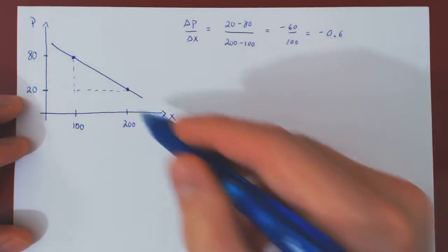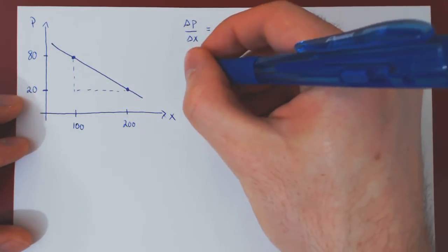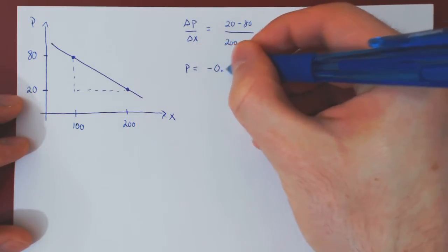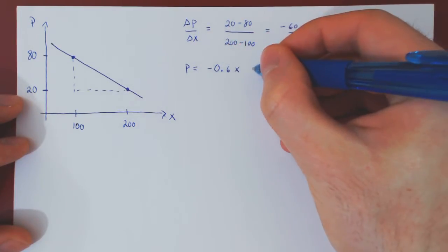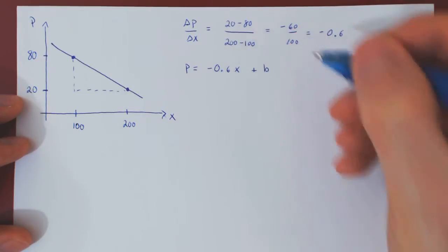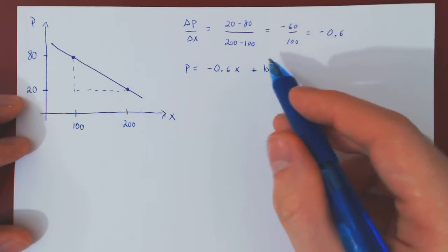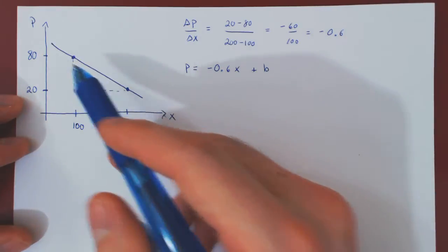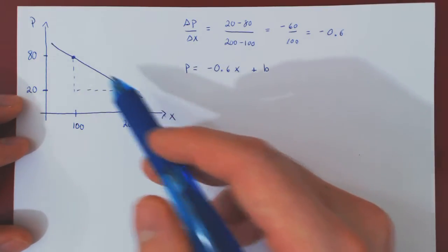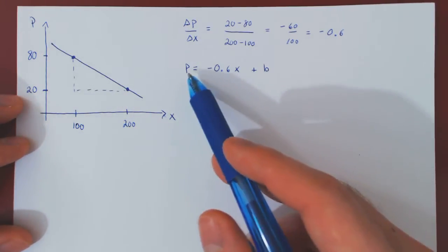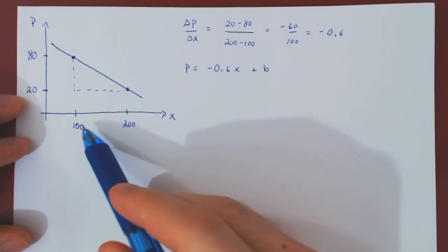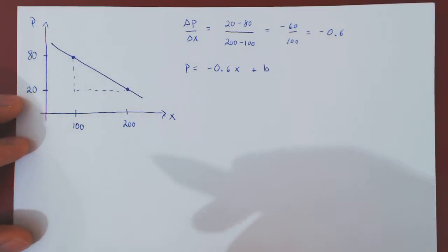So we have the slope of this line. p must be equal to negative 0.6 times x plus a constant b. To find the constant b, we can use either point, since each point lies on the line and must satisfy the equation. Let's use the point (100, 80).